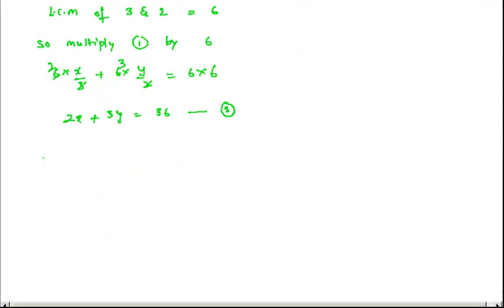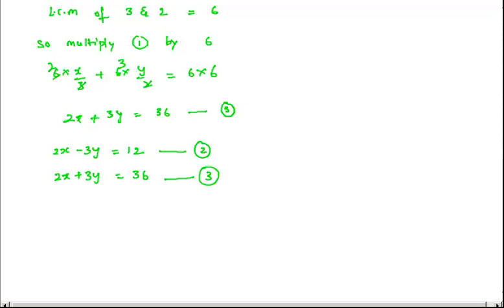Now we have to solve equations 2 and 3. Equation 2 is 2x − 3y = 12 and equation 3 is 2x + 3y = 36. Adding the two equations, the −3y and +3y cancel, and 2x + 2x gives 4x. So 4x = 12 + 36 = 48.